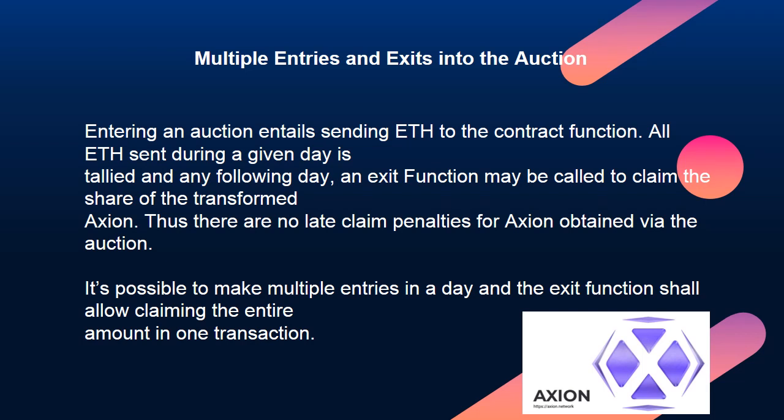Entering an auction entails sending ETH to the contract function. All ETH sent during a given day is tallied, and the following day an exit function may be called to claim the share of the transformed Axion. Thus there are no late claim penalties for Axion obtained via the auction. It's possible to make multiple entries in a day, and the exit function shall allow claiming the entire amount in one transaction.